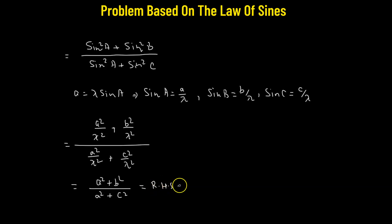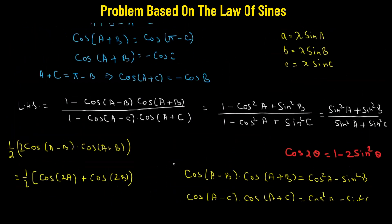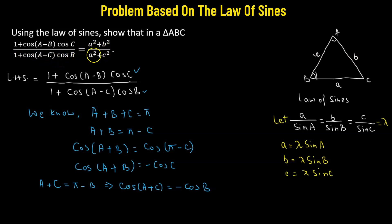Hence, we have successfully shown that the given expression — 1 plus cos(A − B)·cos C divided by 1 plus cos(A − C)·cos B — equals (a² + b²)/(a² + c²), using the Law of Sines.